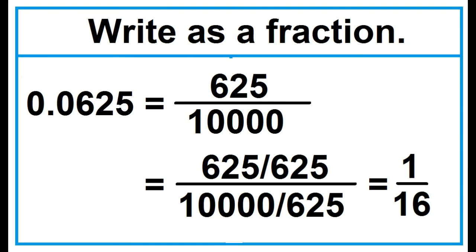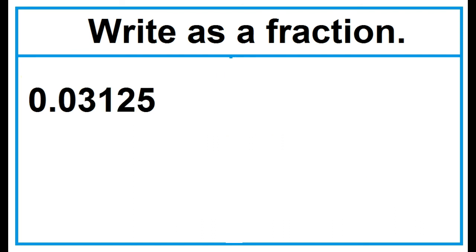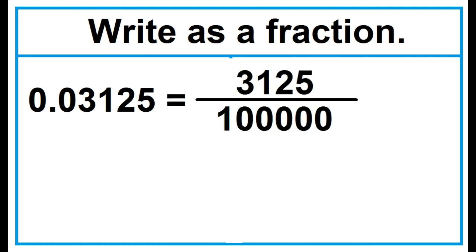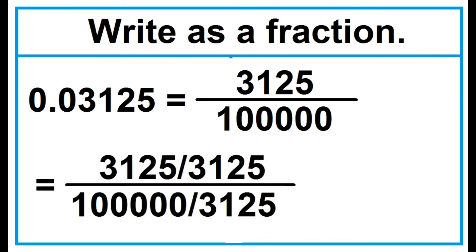Another example: write as a fraction, 0.03125. This is read as 3125 hundred-thousandths. Write 3125 as the numerator and 100,000 as the denominator. 3,125 is common to the numerator and denominator.